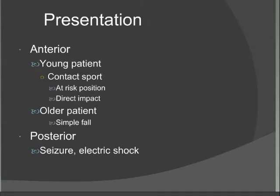Older patients typically suffer simple falls with dislocations and often have associated rotator cuff tears. In regard to posterior dislocations, these are generally due to seizures, electric shocks, or severe trauma. The reason they occur with seizures or electric shocks is that the internal rotators of the shoulder are stronger than the external rotators, and these strong muscles pull the shoulder into a posterior dislocation.